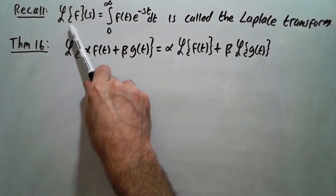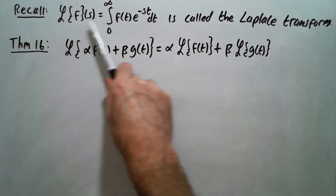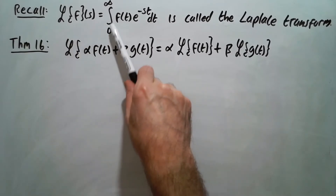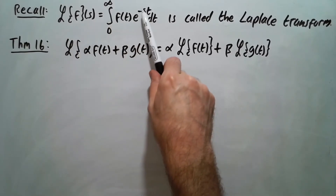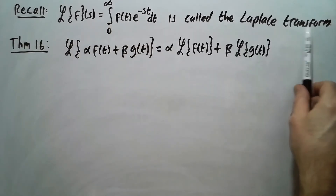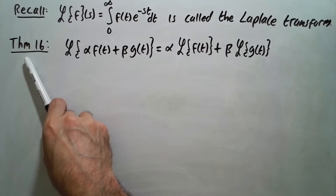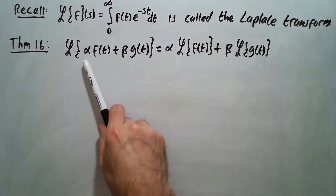Recall the definition of the Laplace transform of f equals the integral from zero to infinity of f times e to the minus st dt. That's the Laplace transform. So in Theorem 16, we basically have to show that the Laplace transform is a linear transformation.